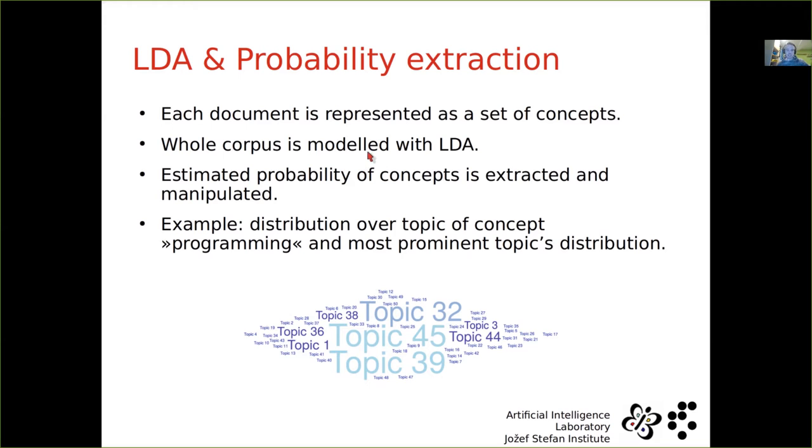After LDA converges, we extract so-called per topic, per concept, per word probabilities in so-called beta matrix. Beta matrix, for LDA to converge, you have to specify number of topics. We selected 50 in our example. And this beta matrix, in this beta matrix, each topic has those probabilities that sum to one for that topic. So topic 32, for example, will have beta that will sum to one.